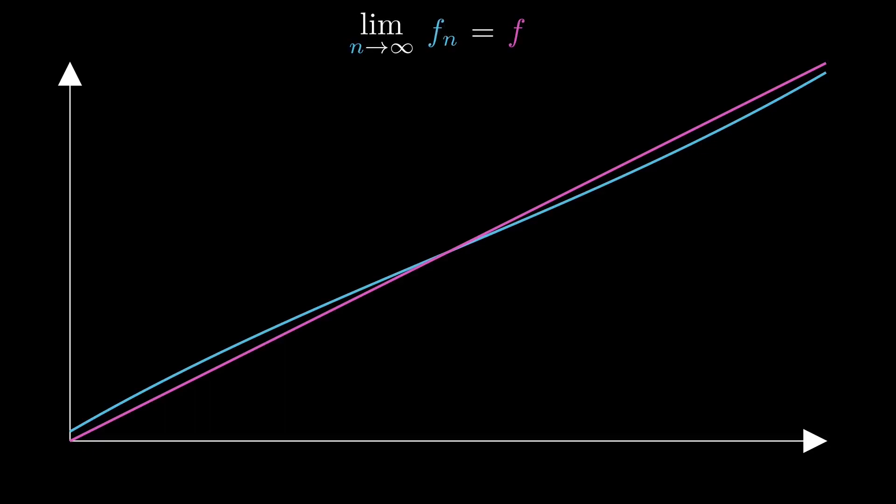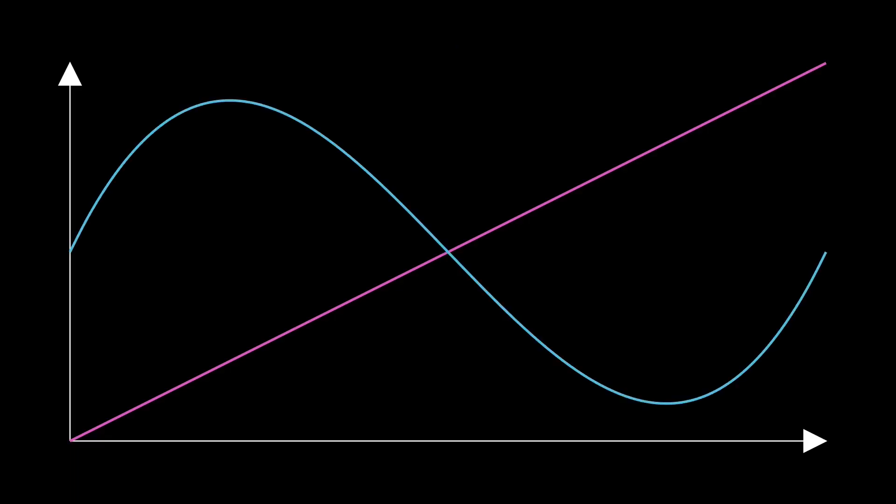We say that the limit of fn as n goes to infinity equals f. So very loosely speaking, that's the case if the blue graphs of the fn approach the pink graph of f. Let's make this more precise.